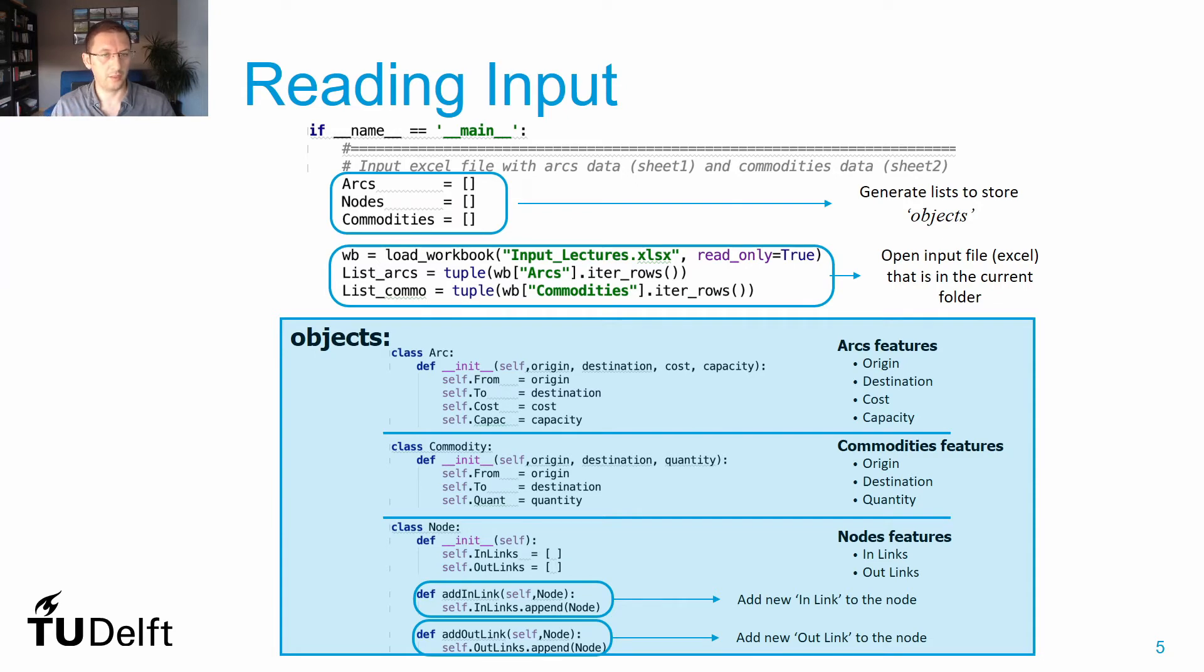The way I model these arcs, nodes, and commodities was using the concept of objects, so each arc, each node, and each commodity for me is an object. This is an option to use object-oriented philosophy—you could have followed other simpler approaches, but I find it easier to understand.